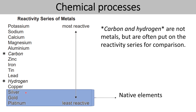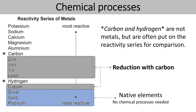Also remember that we've got the native elements here: silver, gold, and platinum, which require no chemical processes in order to extract. However, those metals less reactive than carbon — including zinc, iron, tin, lead, and copper — do need to be extracted, and they can be extracted by a process called reduction with carbon.